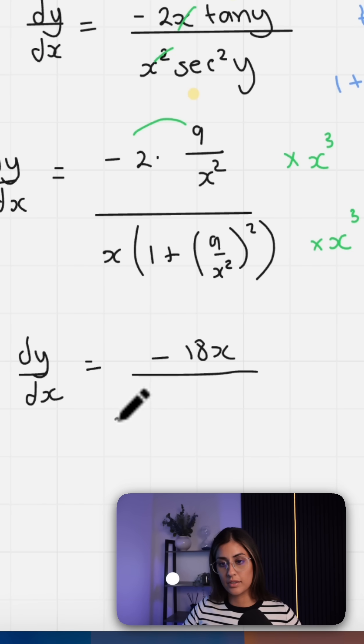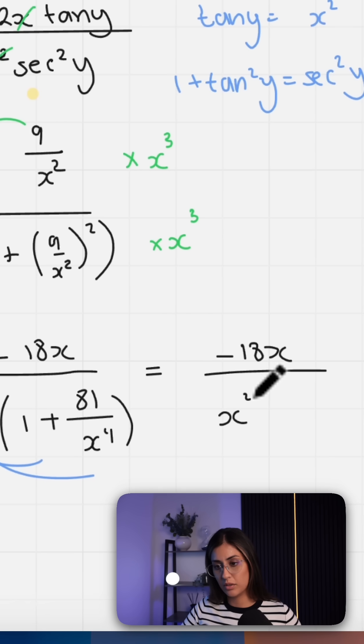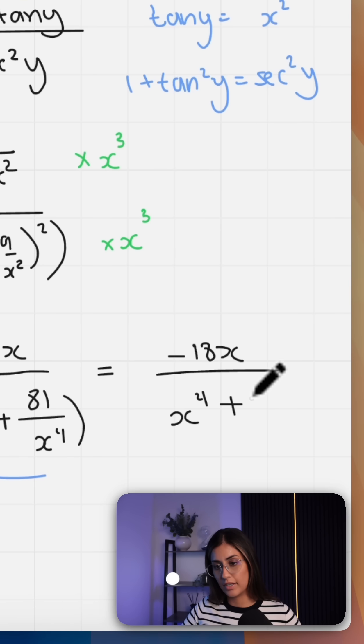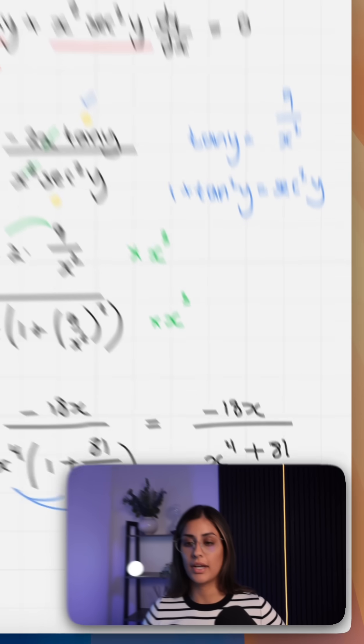x times x cubed gives us x to the 4. 9 squared is 81. x squared squared is x to the 4. And then all we're going to do is just expand out this last part here. That's x to the 4 times 1, and that just gives us 81 because x to the 4 cancels out. And that should be what you had to show.